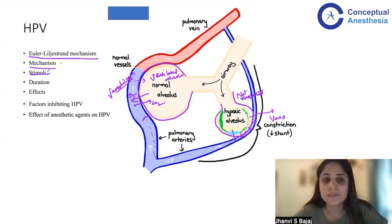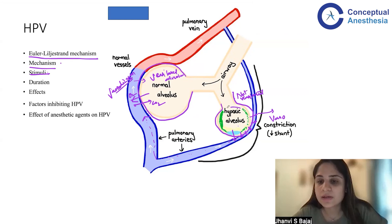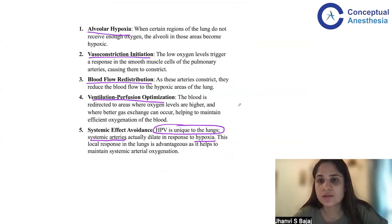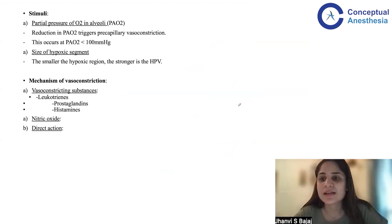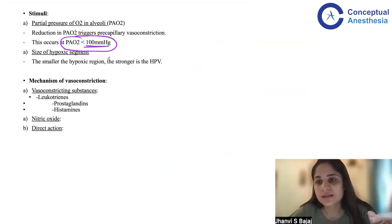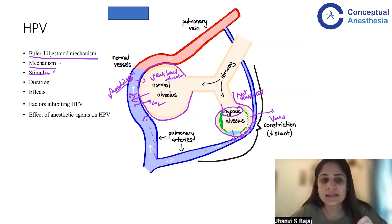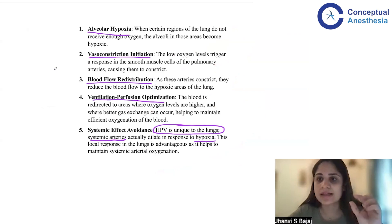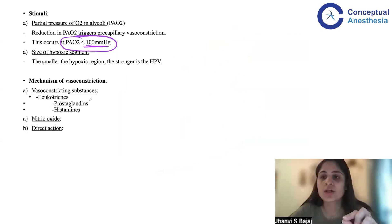The next point covers the stimulus of HPV — how is it initiated? We know HPV is triggered by alveolar hypoxia, but specifically, the examiners may ask how much hypoxia is required. HPV is initiated when the PAO2 — the alveolar partial pressure of oxygen — falls below 100 mmHg. At this threshold, certain substances are released that cause vasoconstriction.